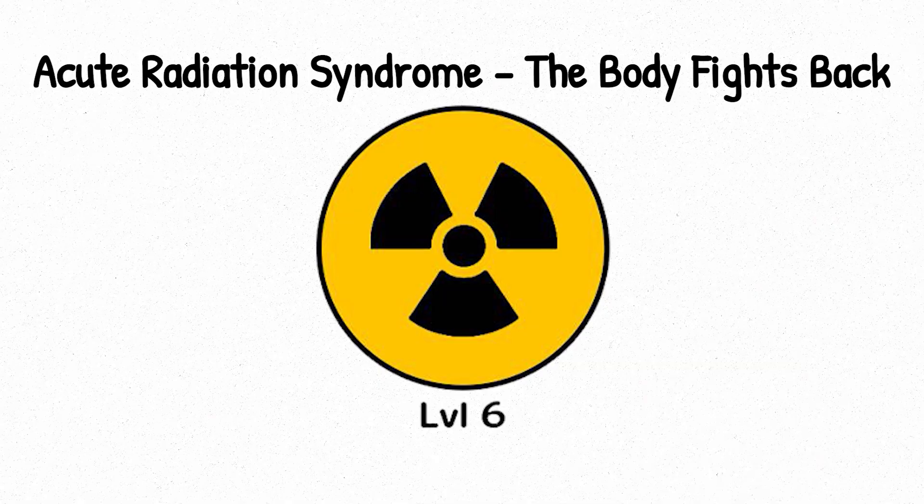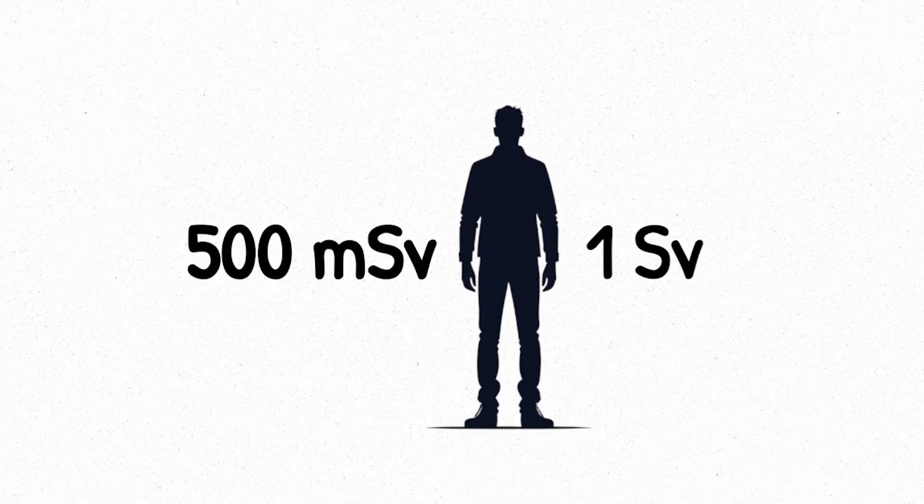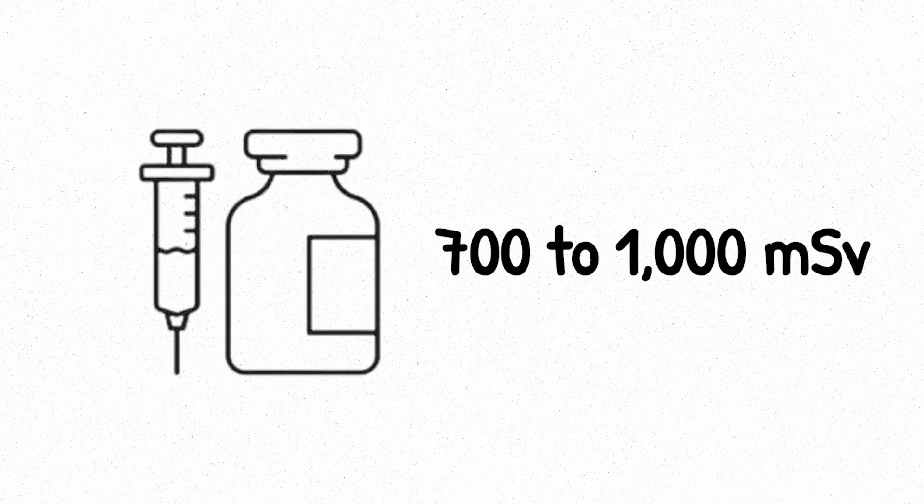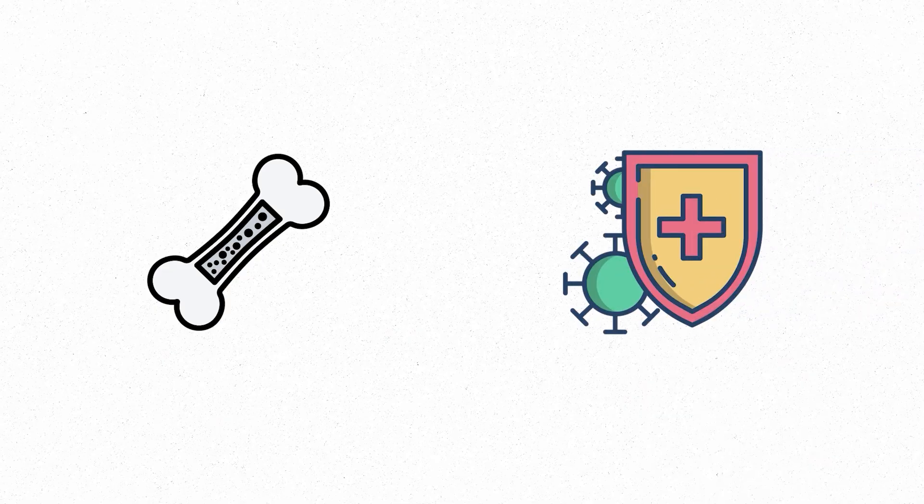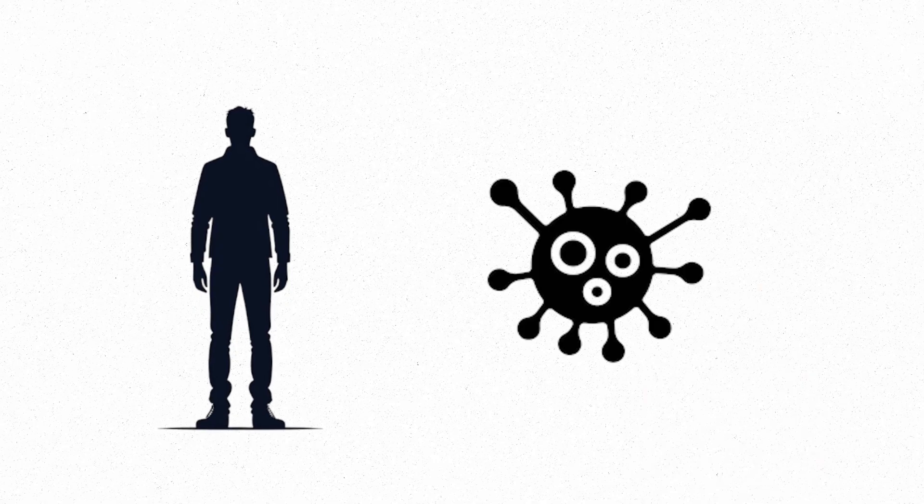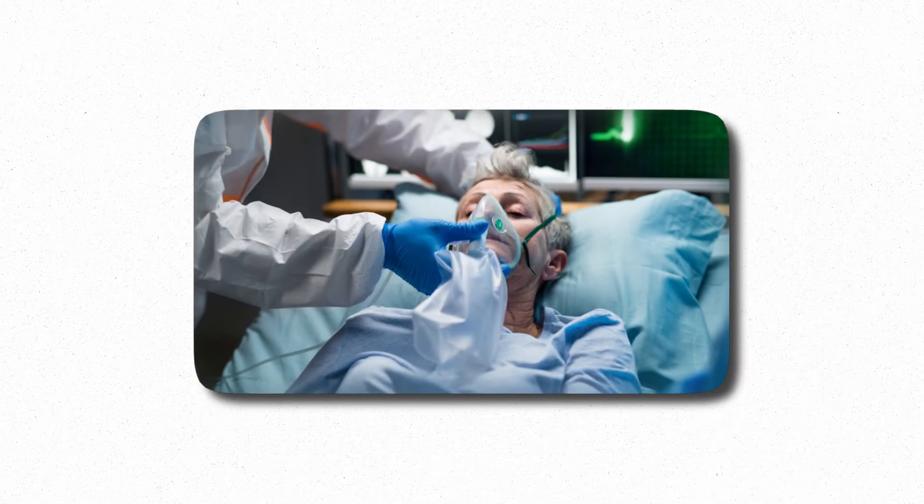Level six, acute radiation syndrome. The body fights back. At level six, the body stops absorbing radiation quietly. Exposure between 500 millisieverts and one sievert pushes the body into a full-blown crisis. This is where acute radiation syndrome, or ARS, begins. At doses around 700 to 1,000 millisieverts, your bone marrow, the factory for your immune system, starts to shut down. White blood cell production drops. Your ability to fight infection collapses. You may not feel it immediately, but within hours to days, symptoms appear.